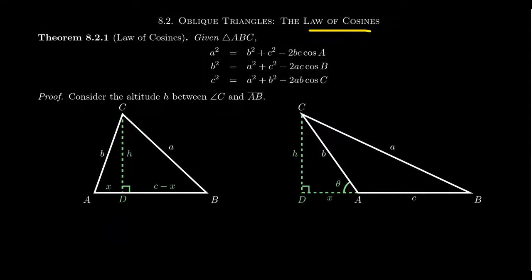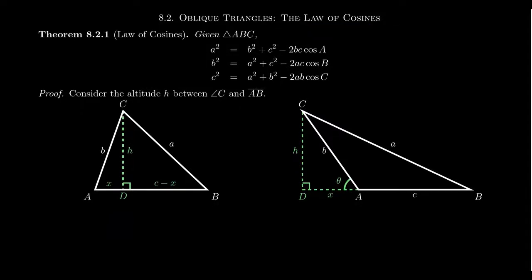The law of cosines uses the cosine ratio to help us have a better understanding of oblique triangles. We're going to take a triangle and basically dissect it into right triangles using altitudes. There are two cases to consider: acute triangles and obtuse triangles. With an acute triangle the altitude will be interior, but for an obtuse triangle the altitude will be exterior. That's how we'll relate SOH-CAH-TOA relationships to oblique triangles, giving us the law of cosines. The law of cosines looks like the Pythagorean equation, and in the special case where the angle is 90 degrees, it simplifies to the Pythagorean relationship.